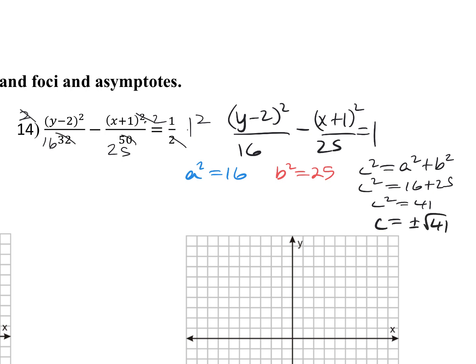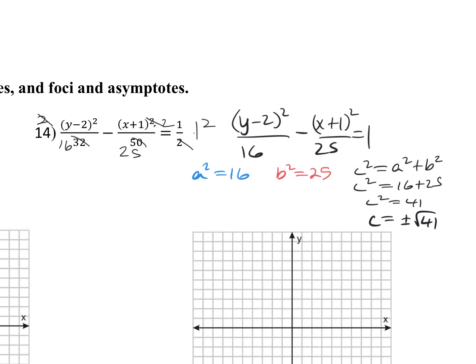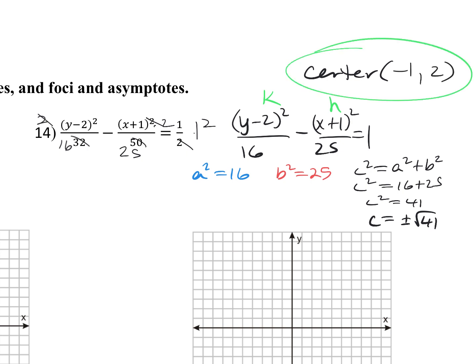For the hyperbola, a-squared is always first. So my a-squared is 16 and my b-squared is 25. For c, c squared equals a squared plus b squared: 16 plus 25 equals 41, so c is plus or minus the square root of 41. My center — from the equation — is (negative 1, positive 2). For the vertices, I use a.